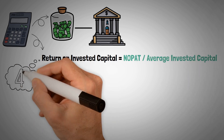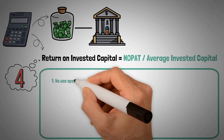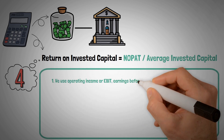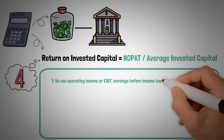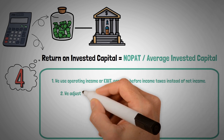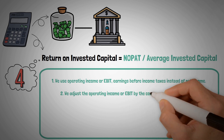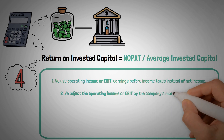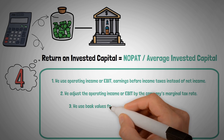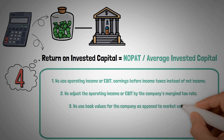There are four components to ROIC. Number one: we use operating income or EBIT — earnings before income taxes — instead of net income. Number two: we adjust the operating income or EBIT by the company's marginal tax rate. Number three: we use book values for the company as opposed to market values.